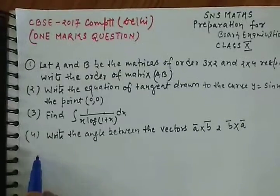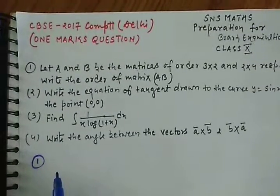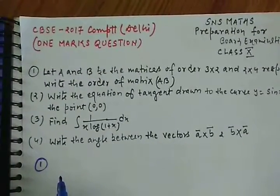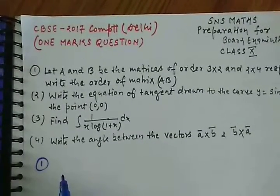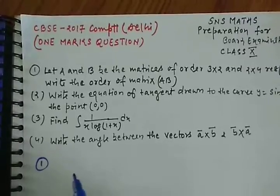Now our first question. First question is that A and B have two matrices of order 3 into 2 and 2 into 4 respectively. Write the order of matrix AB. We have AB. So dear friend, when you have a matrix A, the order is